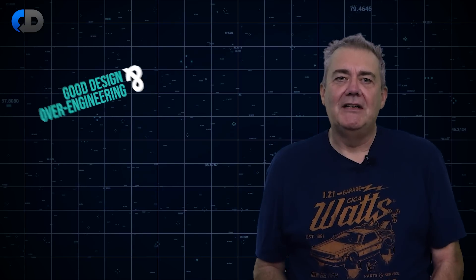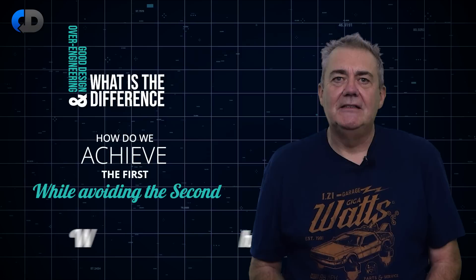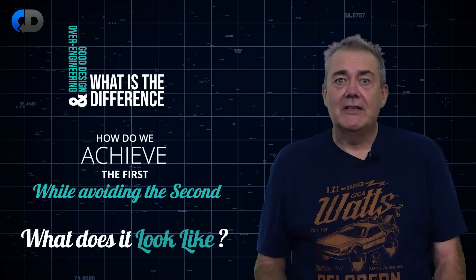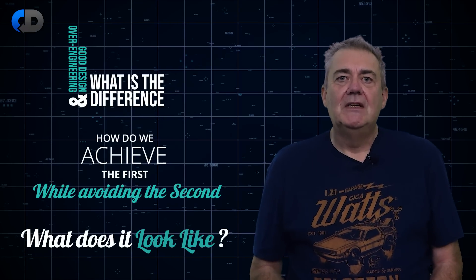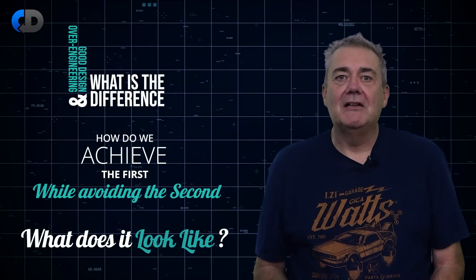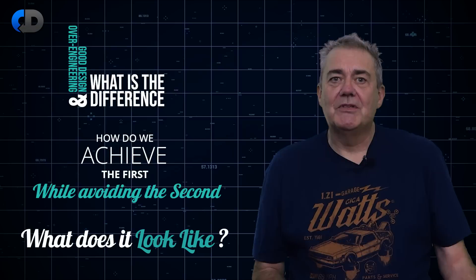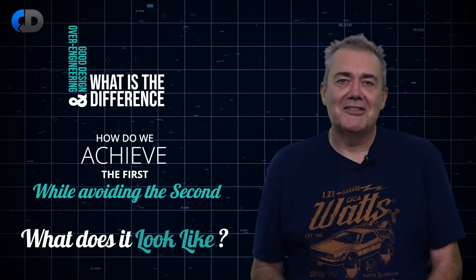What's the difference between good design and over-engineering, and how do we achieve the first while avoiding the second? What does that look like specifically when we manage it? Today I want to explore the difference between big upfront design and incremental design, and specifically what YAGNI means and how, when done well, this helps us avoid building tomorrow's legacy system today.